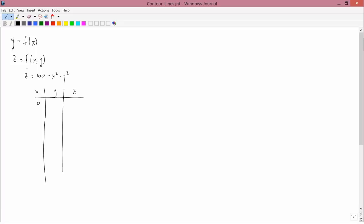So for example, if x is 0 and y is 0, then z is 100 minus 0 squared minus 0 squared, which is 100. If x is 5 and y is 0, then z is 100 minus 5 squared minus 0 squared, which is 100 minus 25, which is 75.